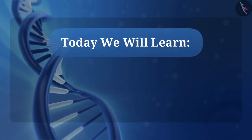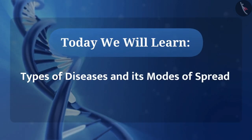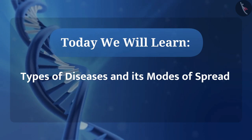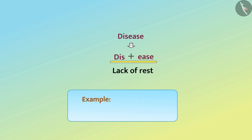Today we will learn about types of diseases and its modes of spread. In the previous video, we learned that disease can be written as dis plus ease, and from this we can take the meaning as lack of rest — for example, cold and cough, elephantiasis, and many more.